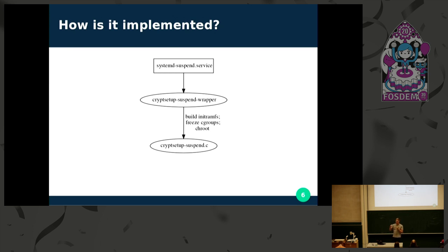We're using the unified cgroups hierarchy to transparently freeze all of your processes. Every cgroup has something like a freezer attribute and we just call it to freeze — something systemd tells you shouldn't do because it interferes with all kinds of processes, but it seems to work quite well at the moment. Then we change root into the ramfs and we call our own binary cryptsetup-suspend.